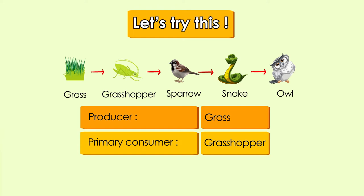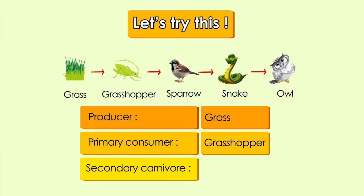For the next question, can you name the secondary carnivore? Is it the sparrow, or is it the snake? A secondary carnivore is an animal that eats the secondary consumer. In this food chain, the secondary consumer is the sparrow, and the sparrow is eaten by the snake. Therefore, the correct secondary carnivore is the snake. Do you see the difference between a secondary consumer and a secondary carnivore now?